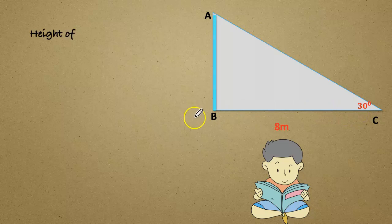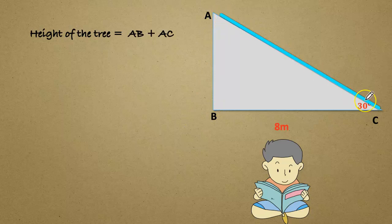To find the height of the tree, we have to add AB plus AC. Let us find this length of the side AB first.